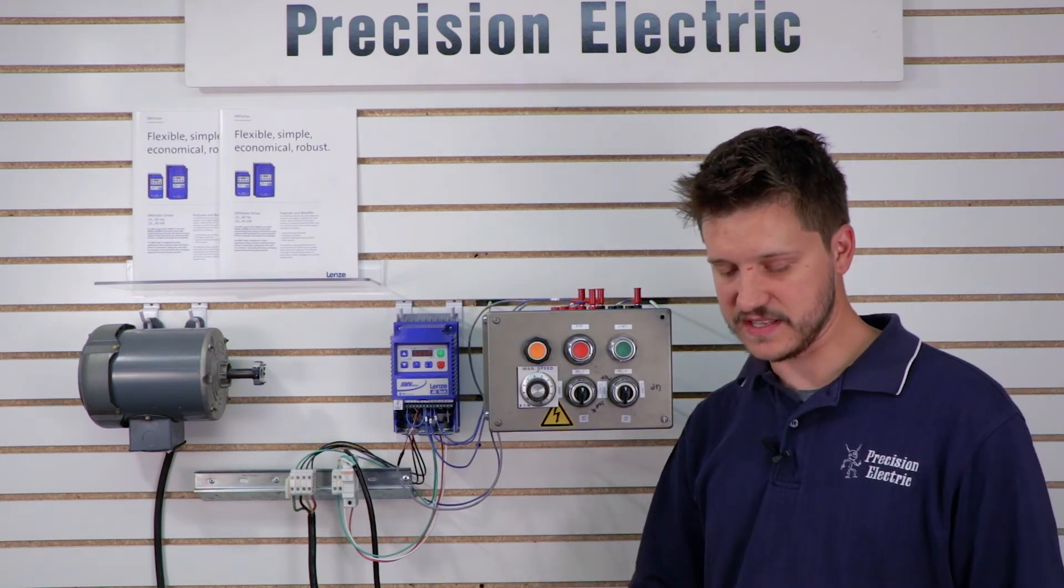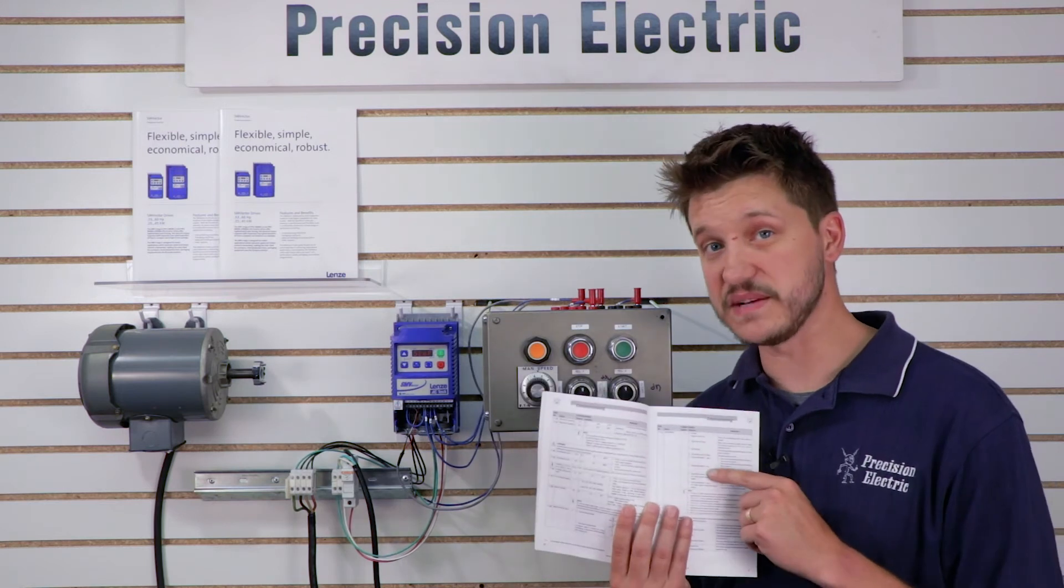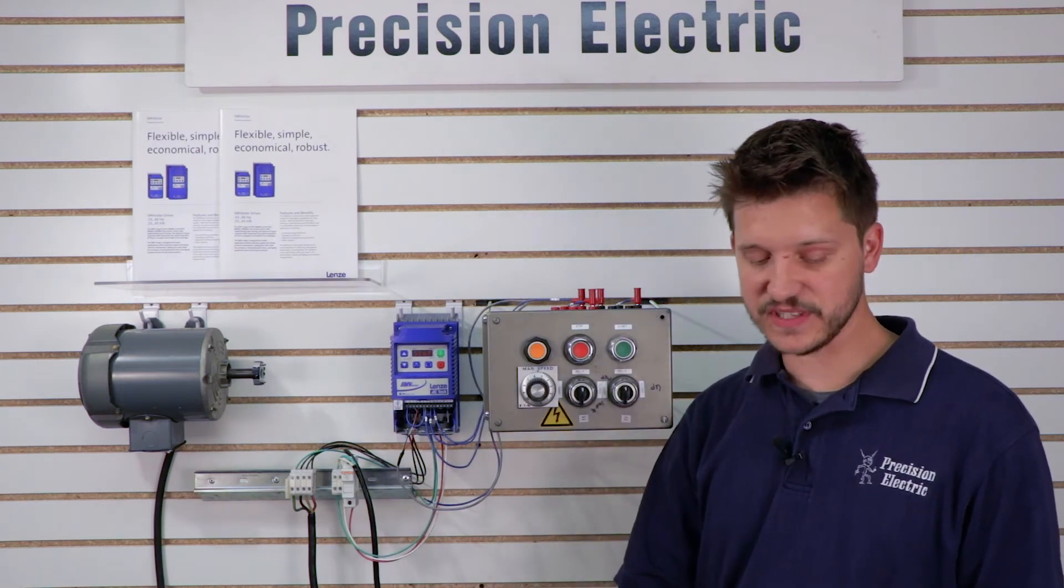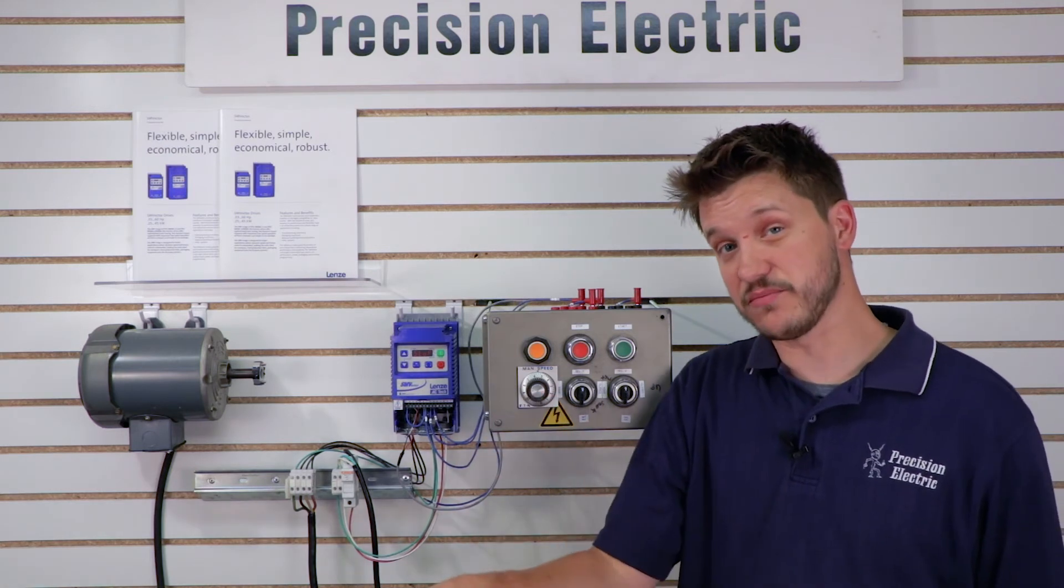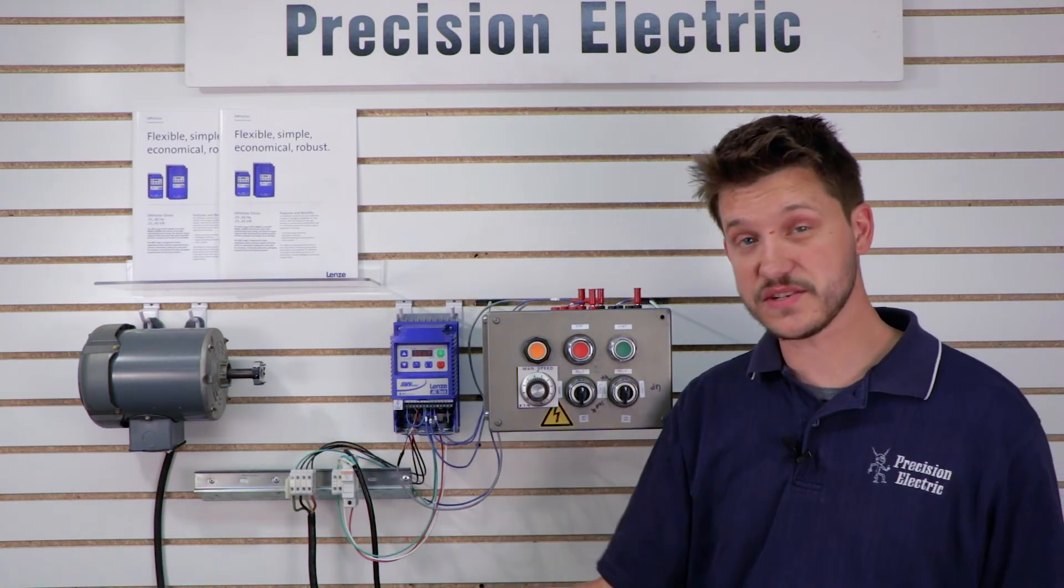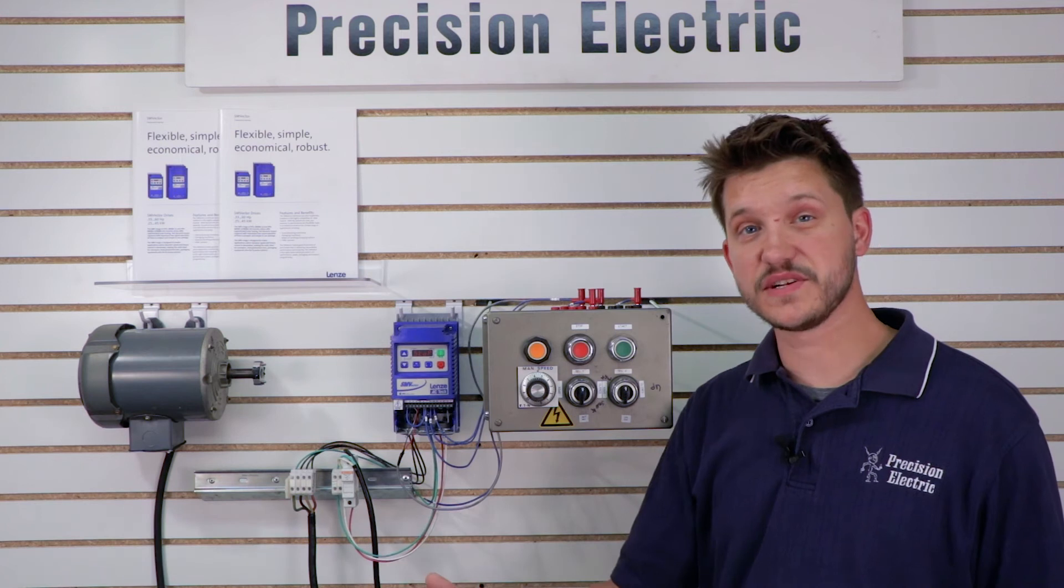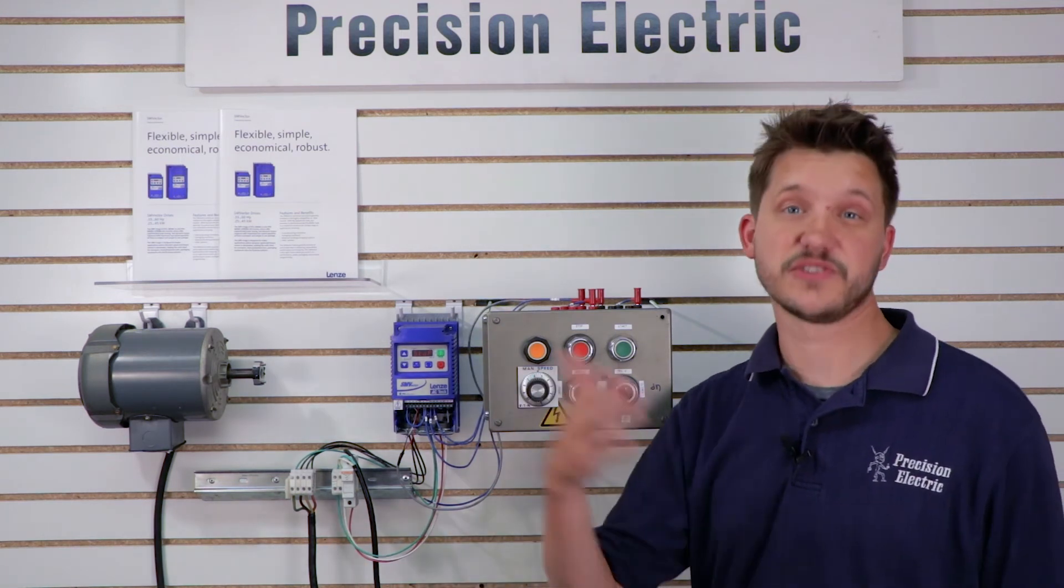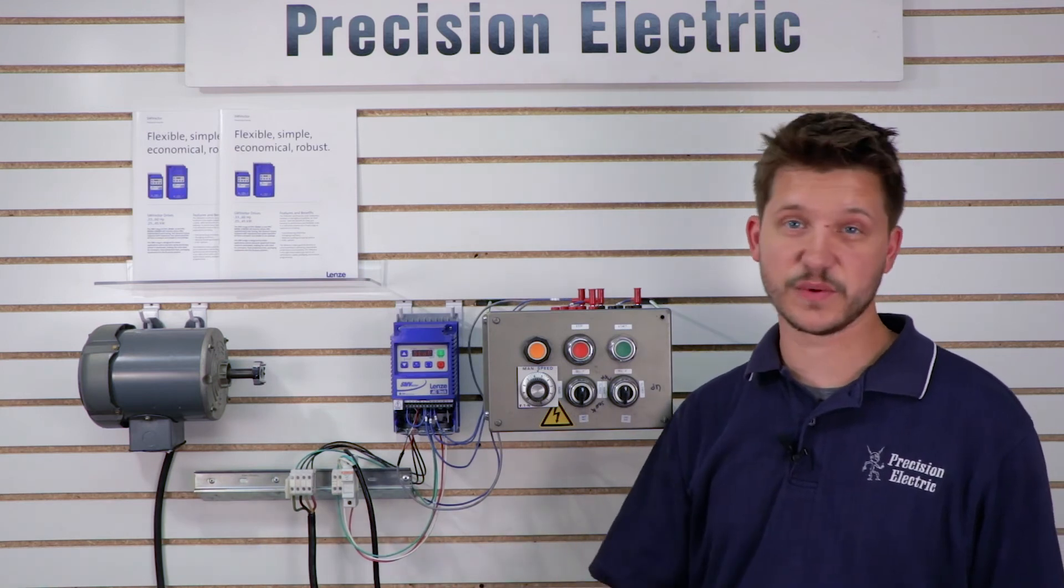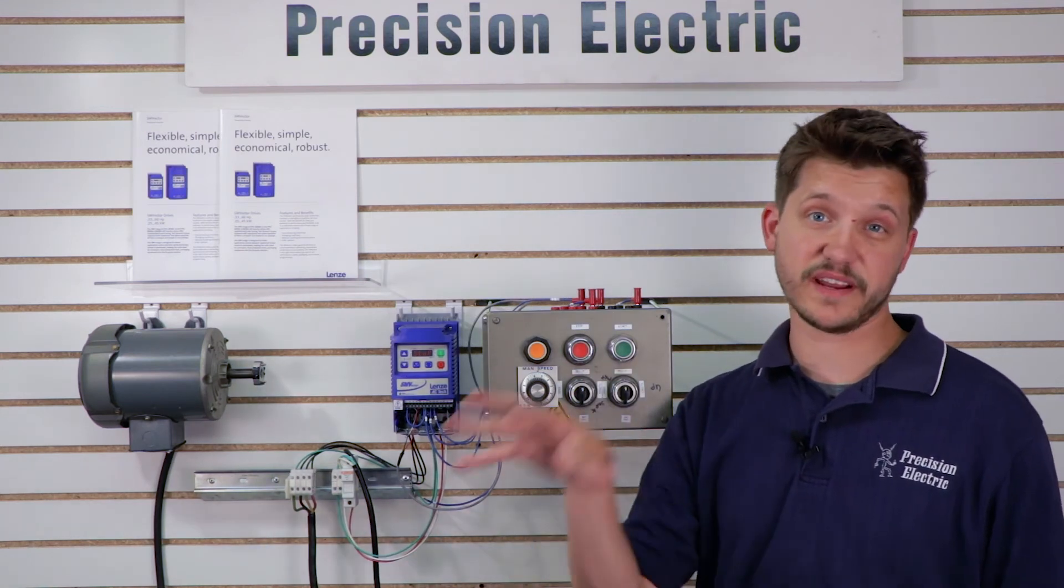The fourth option is the auto restart with DC brake. And essentially, it's the same exact auto start method with the DC brake, where it applies the DC brake first, and then auto restarts. So it's going to attempt to auto restart if it successfully restarts, it'll inject that DC braking into it, and then it'll actually start. So it's the exact same as the auto restart, except for it injects that DC braking in first.